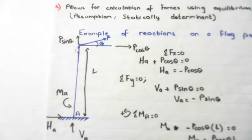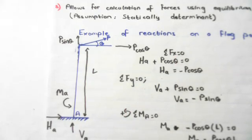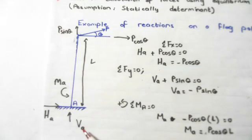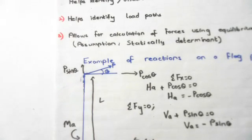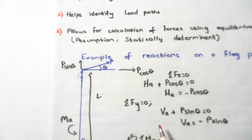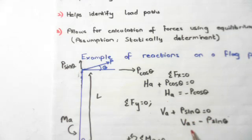For the sum of vertical forces Fy equal to zero, we have VA plus P sin theta equals zero, giving VA = −P sin theta. Both VA and P sin theta are vertical forces, so we apply vertical equilibrium to find VA.